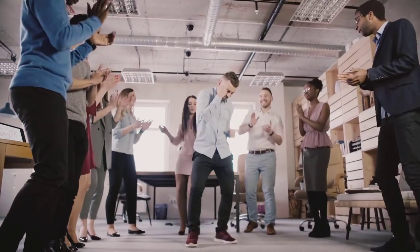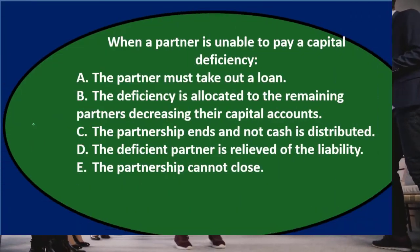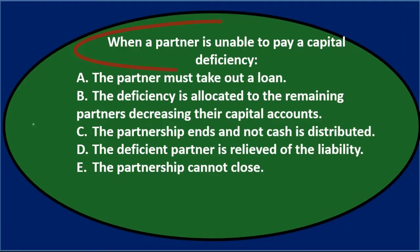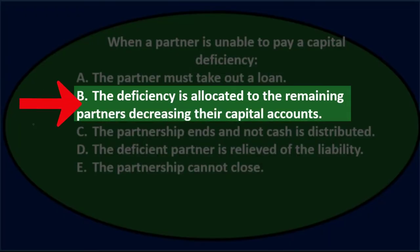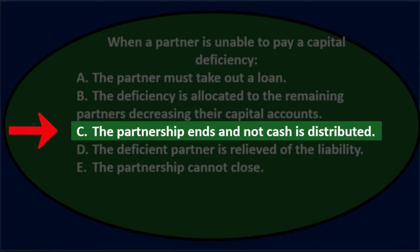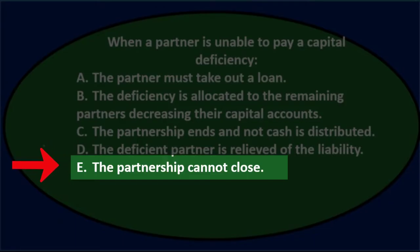Next question: when a partner is unable to pay a capital deficiency, A) the partner must take out a loan, B) the deficiency is allocated to the remaining partners decreasing their capital accounts, C) the partnership ends and no cash is distributed, D) the deficient partner is relieved of the liability, E) the partnership cannot close.